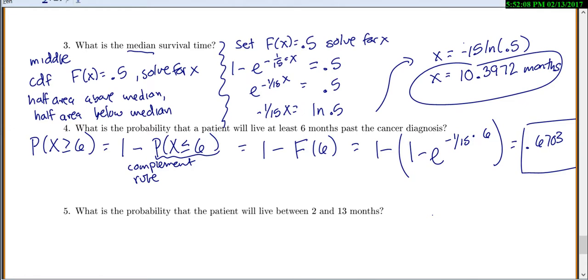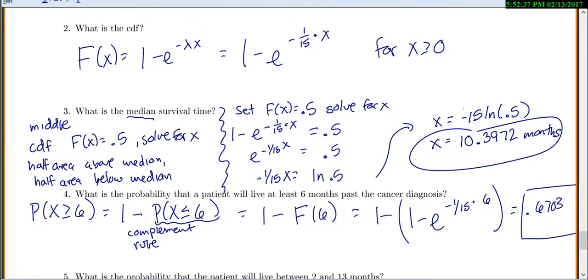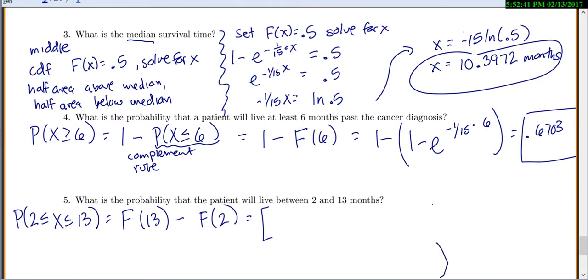And what is the probability that we'll live between 2 and 13 months? Well, if you have 2 bounds for your probabilities, you do the CDF of the upper bound minus the CDF of the lower bound. That's always what you do if you have 2 bounds. This looks really complicated when we try and plug it into our CDF, because we have 1 minus e to the negative 1 over 15, and we'll do that for both of them. So 1 minus e to the negative 1 over 15 times 13 minus, and then we plug in the 2, 1 minus e to the negative 1 over 15 times 2. But we get 0.4548.